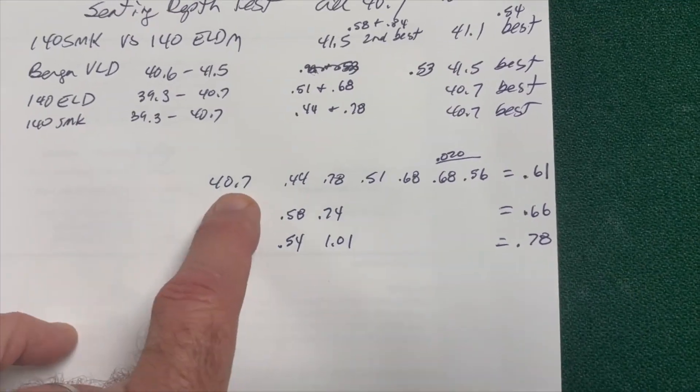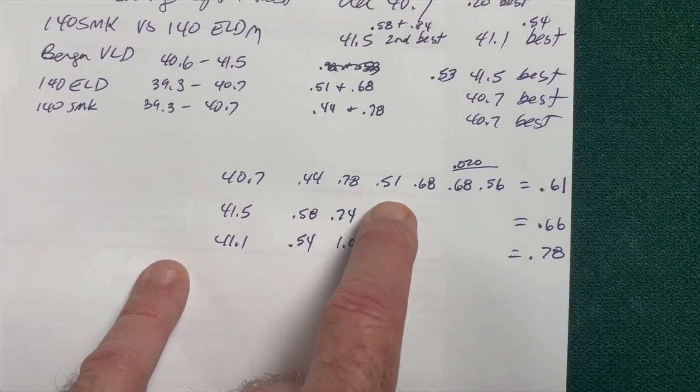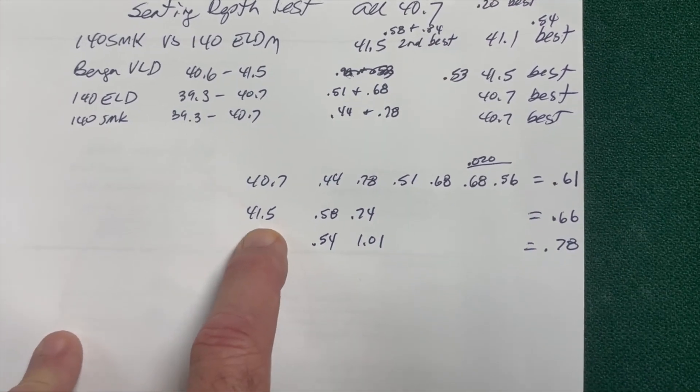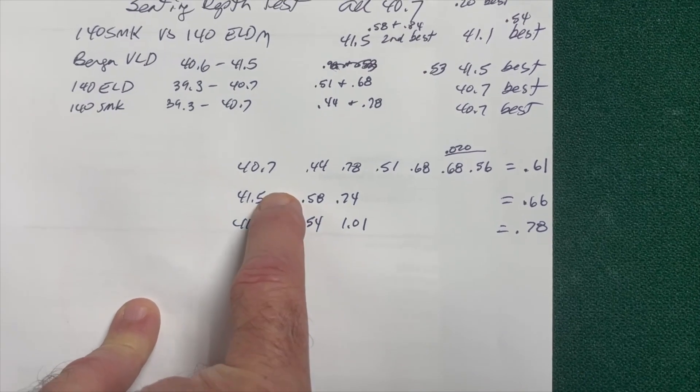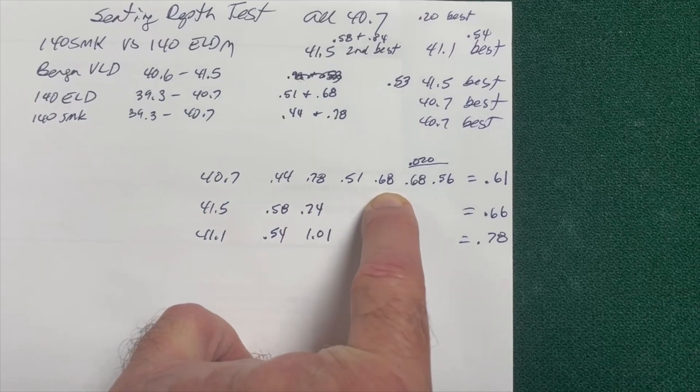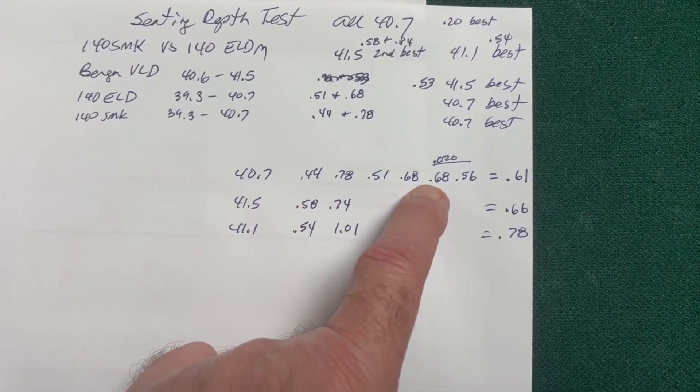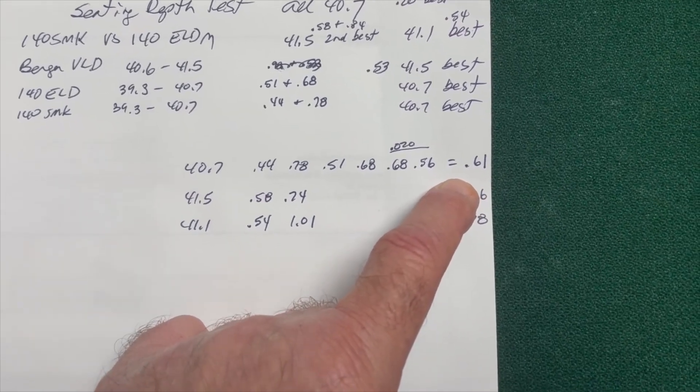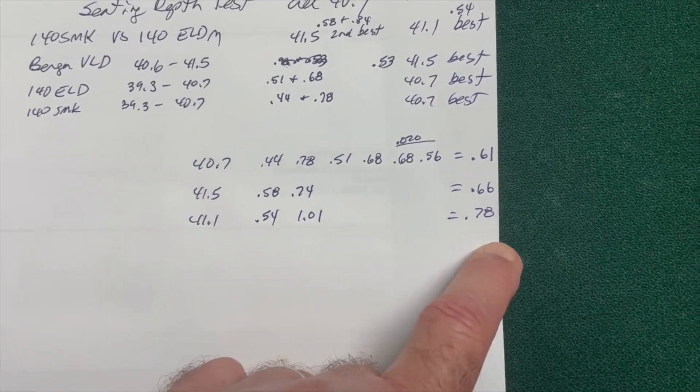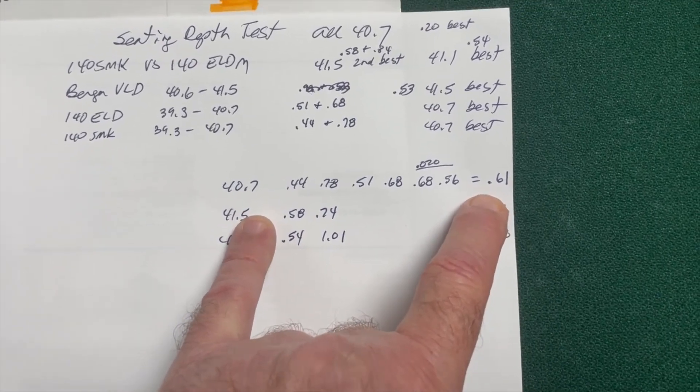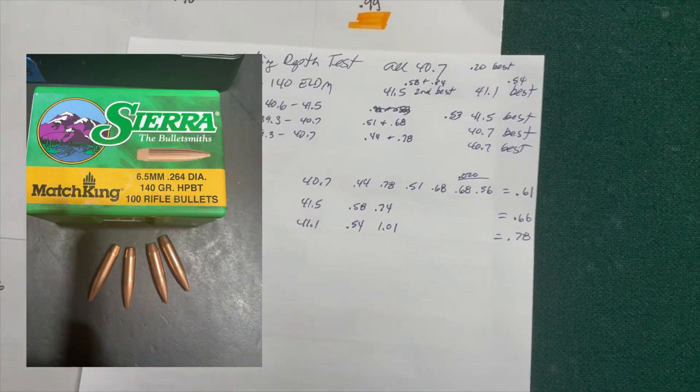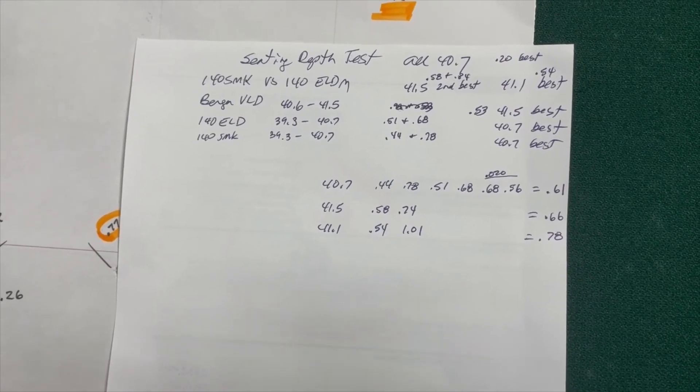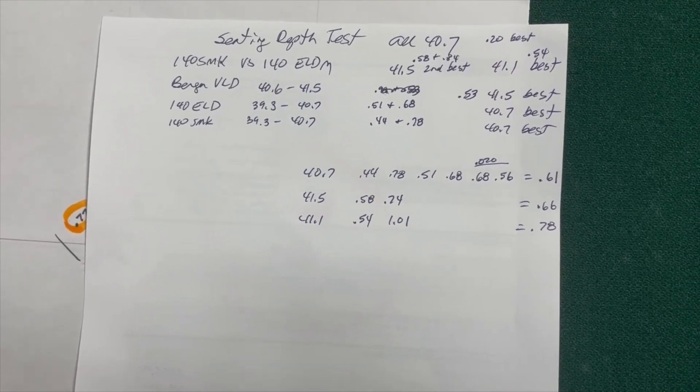Comparing all the data, at 40.7 I had groups of .44, .78, .51, .68, .68 and .56. At 41.5 I had groups of .58 and .74. At 41.1 I had .54 and 1.01. I've had the most experience and best results with 40.7, which averaged a .61 group size. So we're going with 40.7 grains of Hodgdon H4350 powder with Sierra Match King bullets to test five different primers.